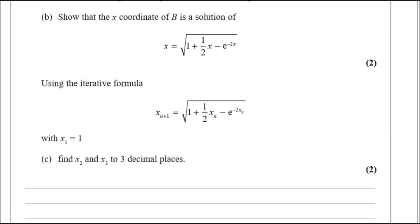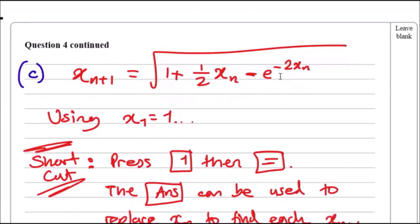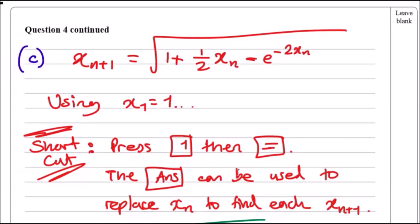For part c, using the iterative formula, it's the same thing replacing x_{n+1} and x_n. Using initial value x_1 = 1, find the next two values. There's a nice trick: use a calculator and the answer button. Press one in your calculator, then press equals to automatically save the value one. Copy this formula down but replace x_n with your answer button. The answer value is currently at one, and every time you press equals it will automatically find the next values.